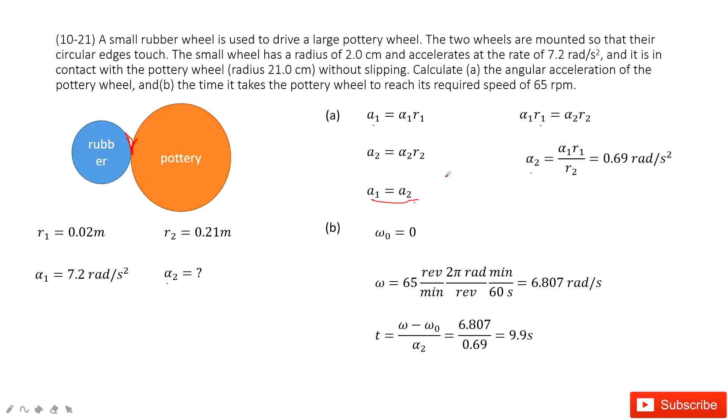The second question asks you the time taking for this pottery circle to reach its required speed, 65 revolution per minute. So that means initially it's stationary, so initial circular acceleration is zero. The final circular velocity given is 65 revolution per minute. So we need to convert the unit to radians per second. And then we use the final angular velocity minus initial angular velocity divided by the circular acceleration to get the time t.